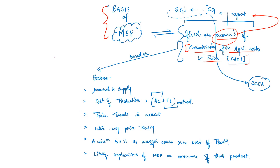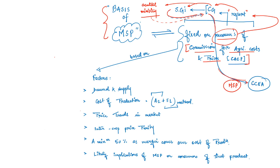The CACP report is sent by the central government to state governments and concerned central ministries. Feedback is received from both, and the central government then finalizes the MSP for that particular season or year in a Cabinet Committee on Economic Affairs (CCEA) meeting. The CACP's recommendations form the basis, and whatever factors CACP considers become the basis of MSP.